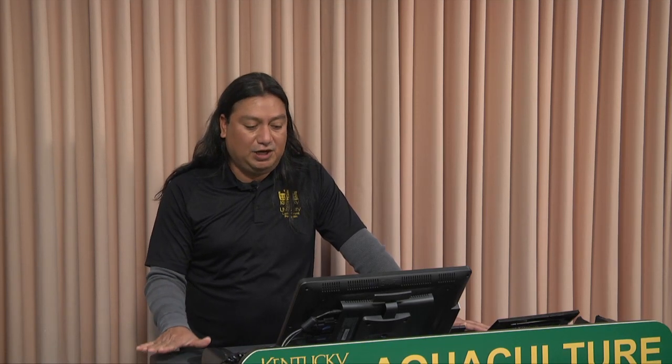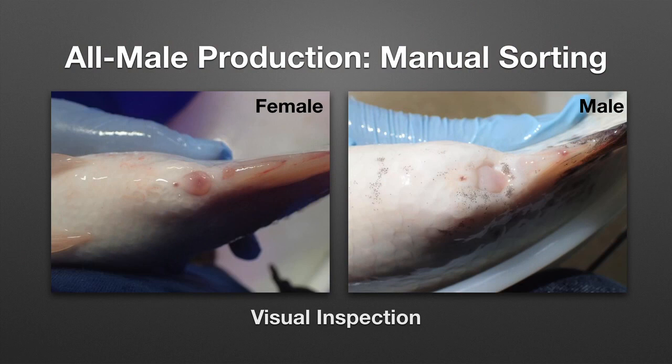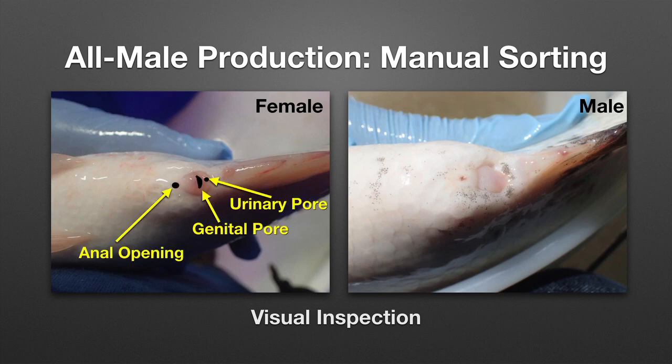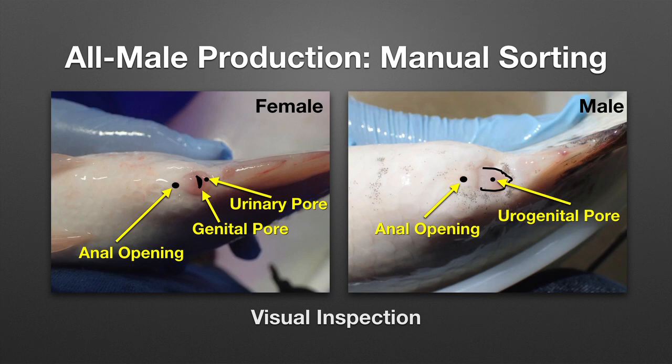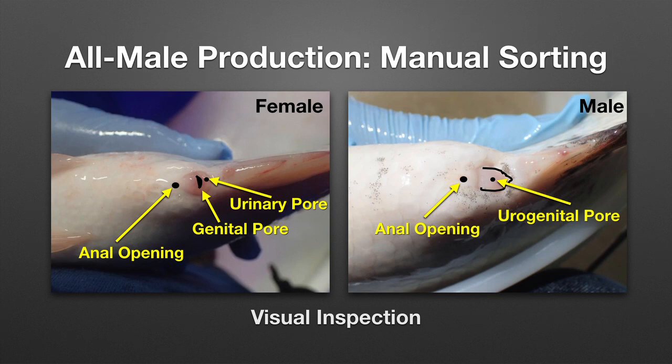Biologically, males grow faster and larger than females, so the proposed solution is to produce all-male fish. There are four major types of all-male production. The first involves manual sorting — visual inspection of female and male anatomy. The female has the anal opening, genital pore, and urinary pore, while the male has only the anal opening and the urogenital pore.